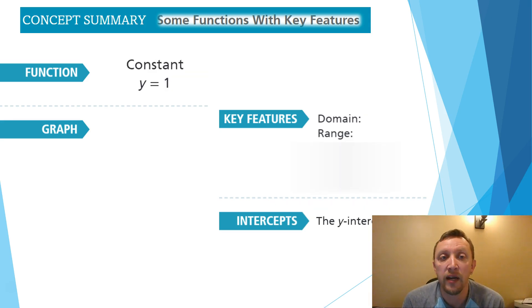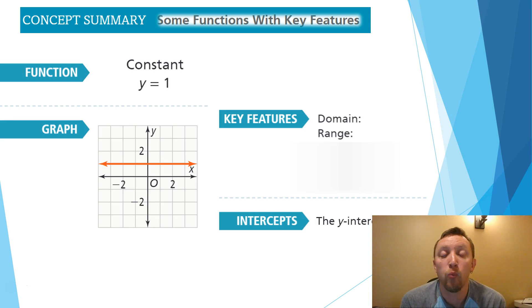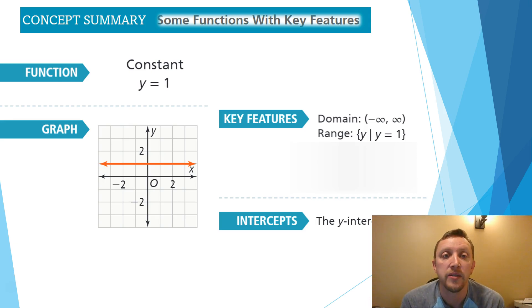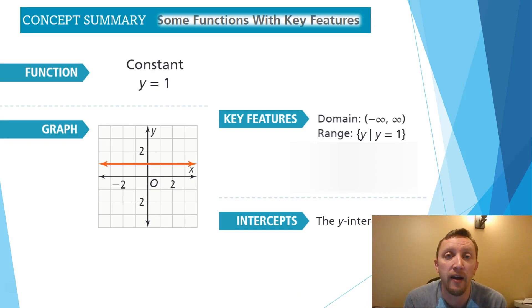We also have the constant function — for example, y = 1, y = 3, y = 8, or y = 0. It's a horizontal line where y equals whatever that number is. The domain is from negative infinity to infinity, and the range is just that single value — in the example, just 1. The y-intercept is 1. That's the end of this chapter. Good luck on the homework, and hopefully this answers any questions from the second part of Lesson 1.1.